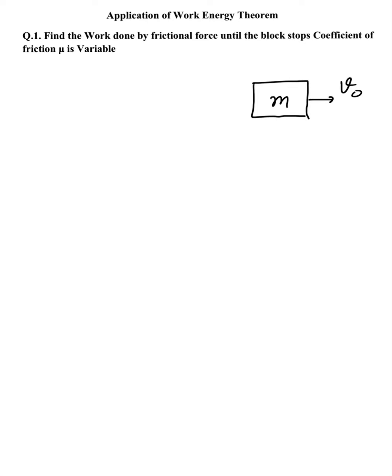Find the work done by frictional force until the block stops. Coefficient of friction is mu. The block is moving with initial speed v naught. After some time, the block is stopped due to friction. So initial velocity is v naught and final velocity is zero due to friction.